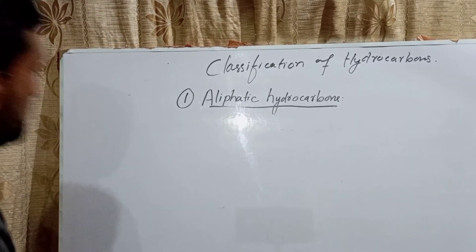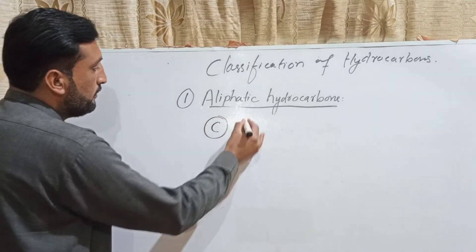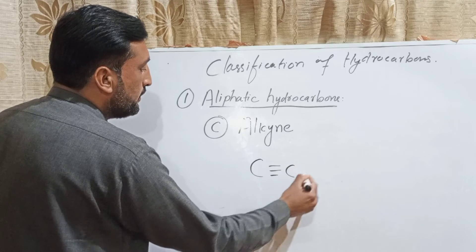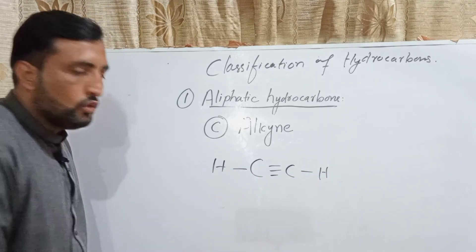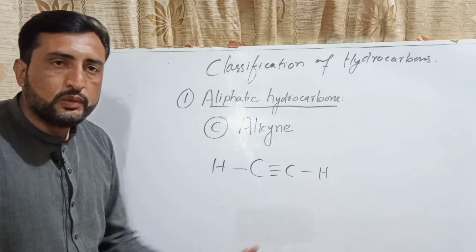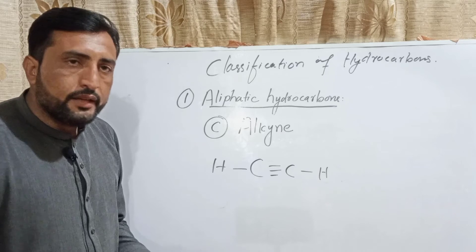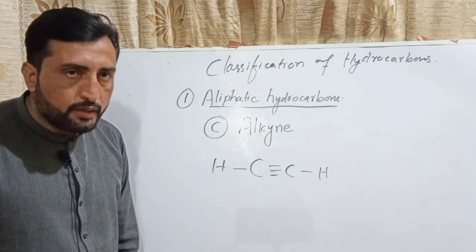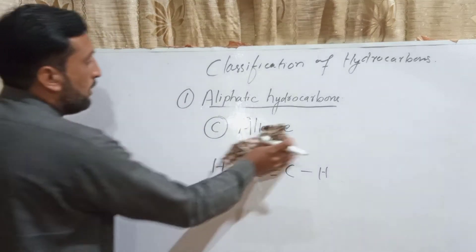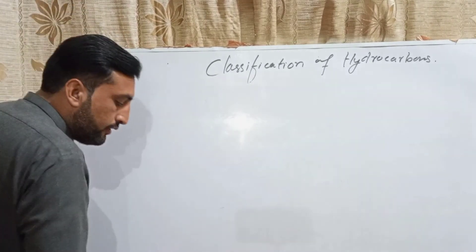The third homologous series of aliphatic hydrocarbons is alkynes. Alkynes contain at least one carbon-carbon triple bond. So the three series of aliphatic hydrocarbons are: alkanes, alkenes, and alkynes.